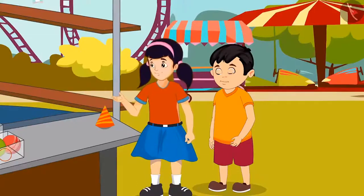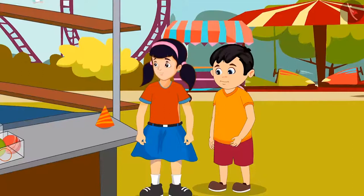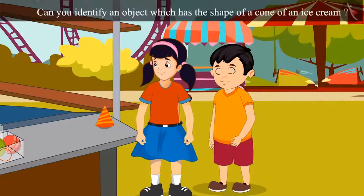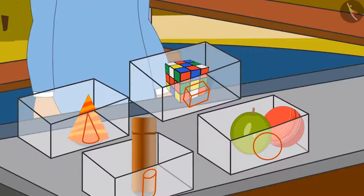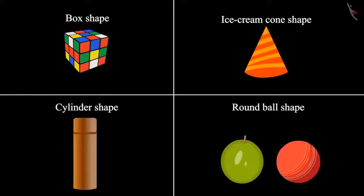Wow Chotu. Now I will put the last item — this shape is like an ice cream cone. Children, can you identify an object which has the shape of a cone of an ice cream? You identified it correctly — this is a cone-like object. Chotu and Neha identified the shapes of all the objects and placed them in different boxes. So children, did you see how they identified four different shapes: round ball shape, ice cream cone-like shape, box-like shape, and cylinder shape?